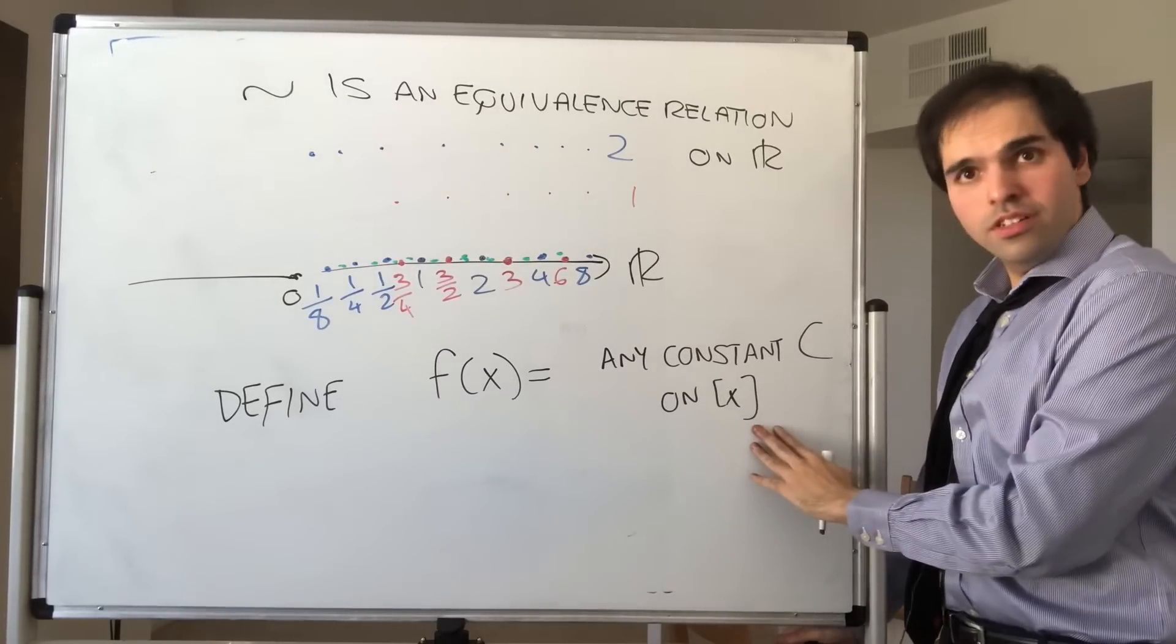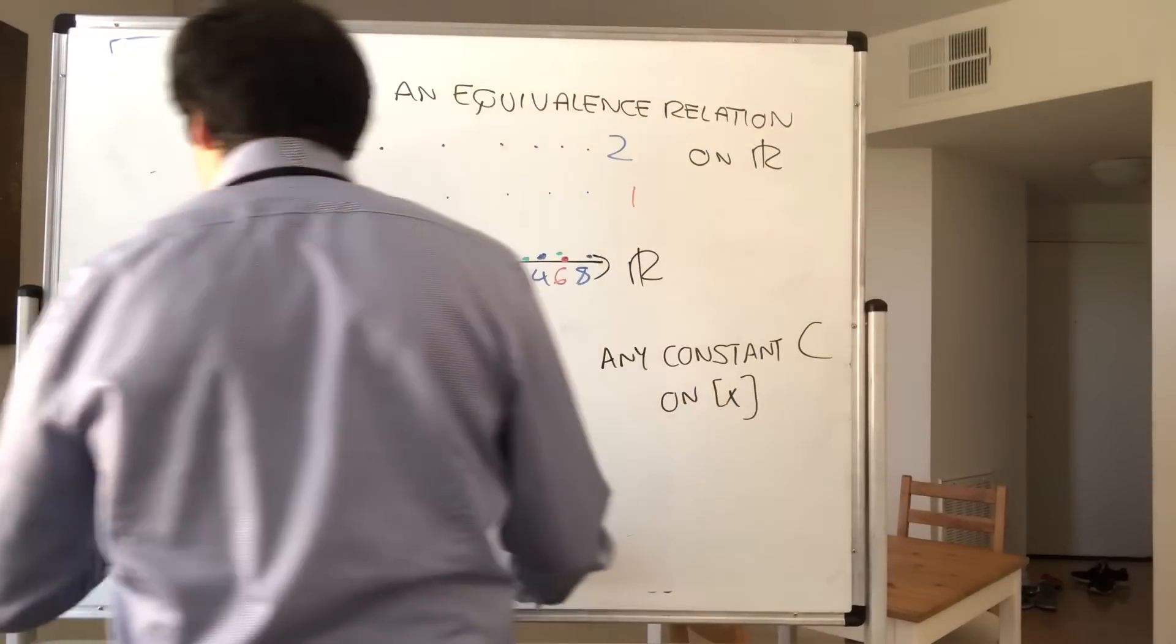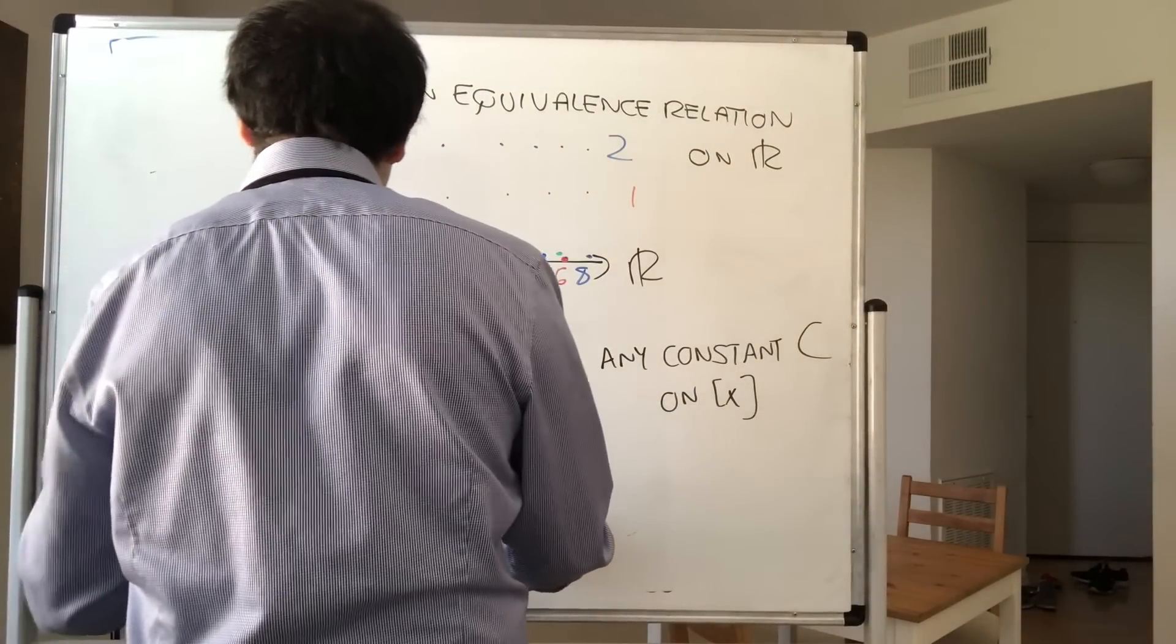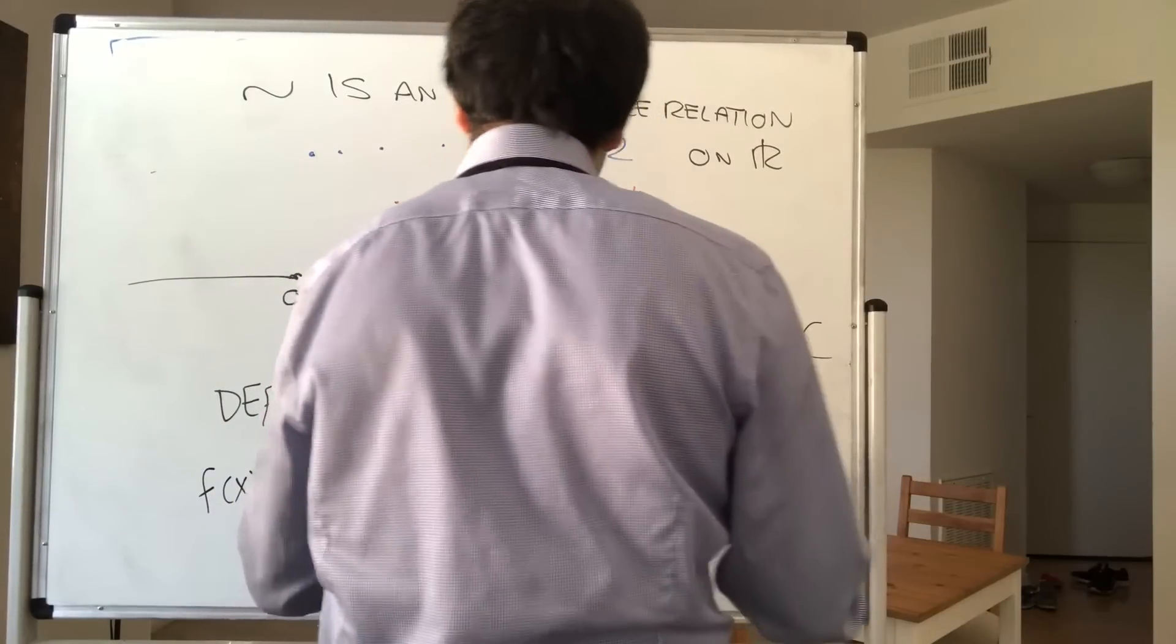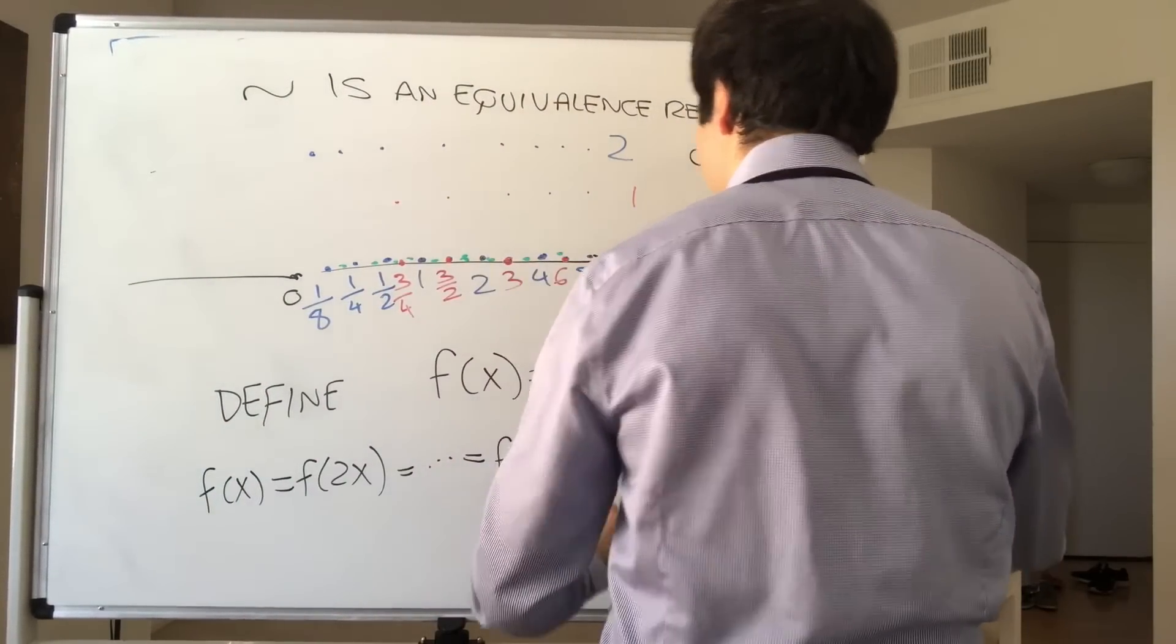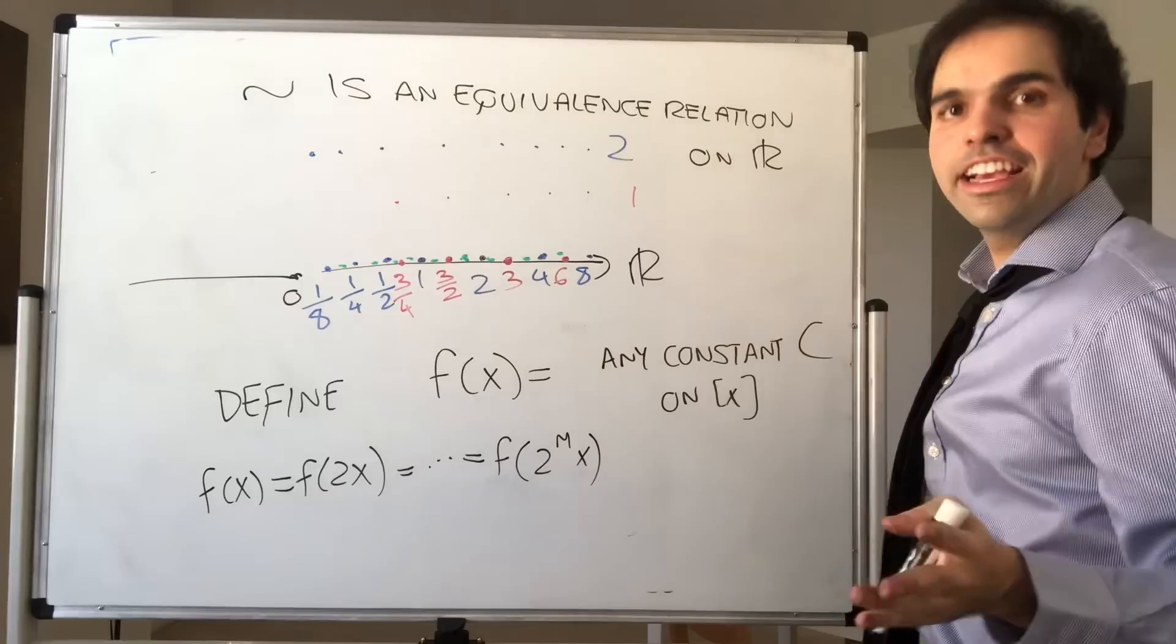And it turns out, this is well-defined, because of the fact that f of x equals f of 2x equals f of 2 to the mx, but also for negative m.